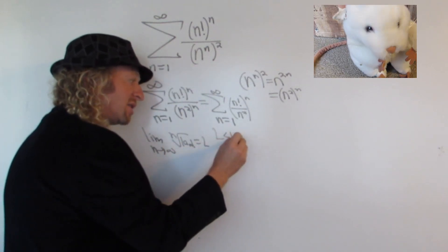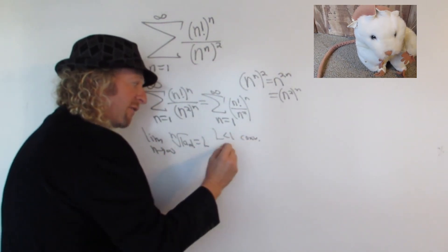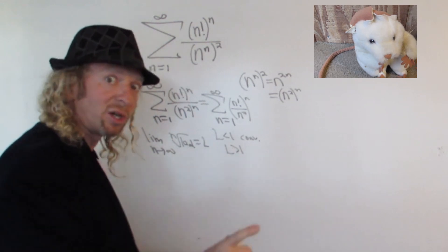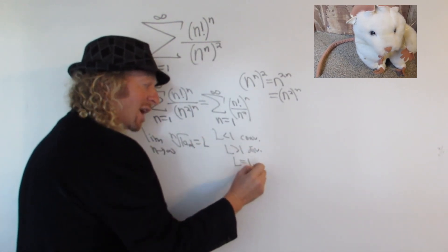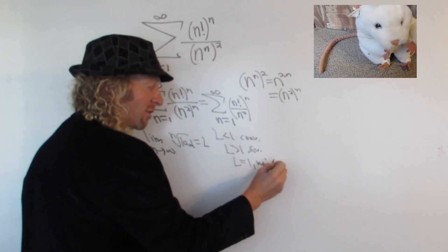If l is less than 1, the series will converge. If l is bigger than 1, the series will diverge. And if l is equal to 1, then we have no information. Fail. The test fails.